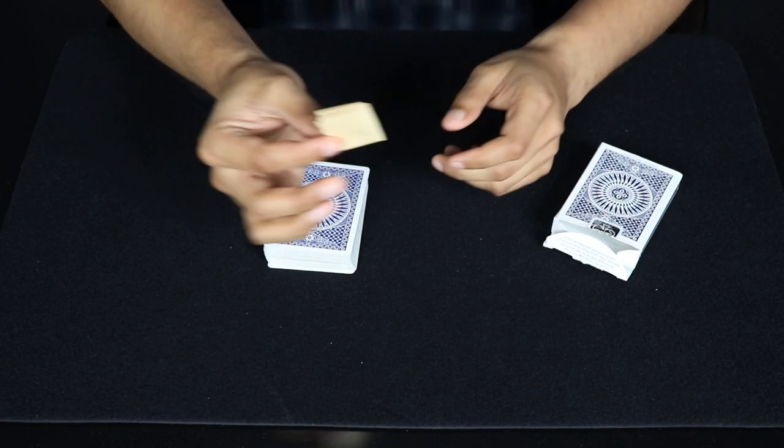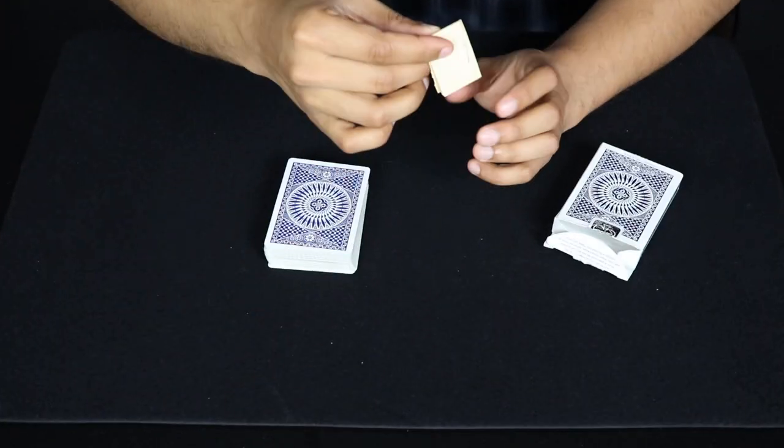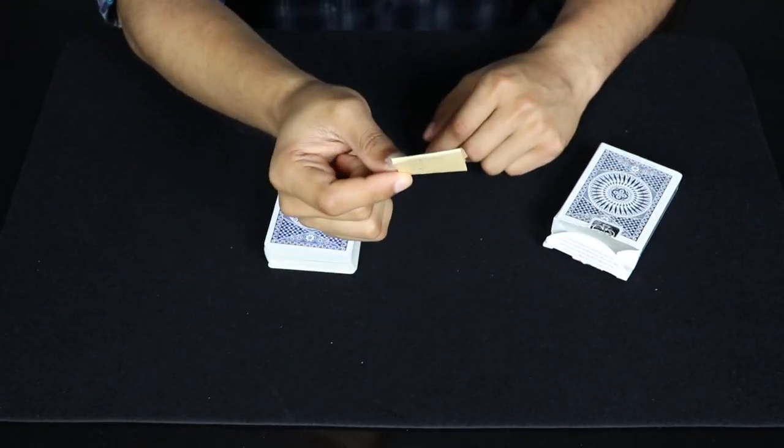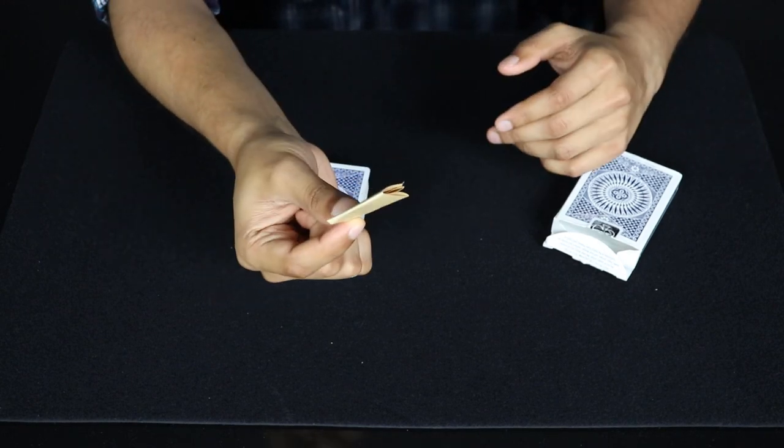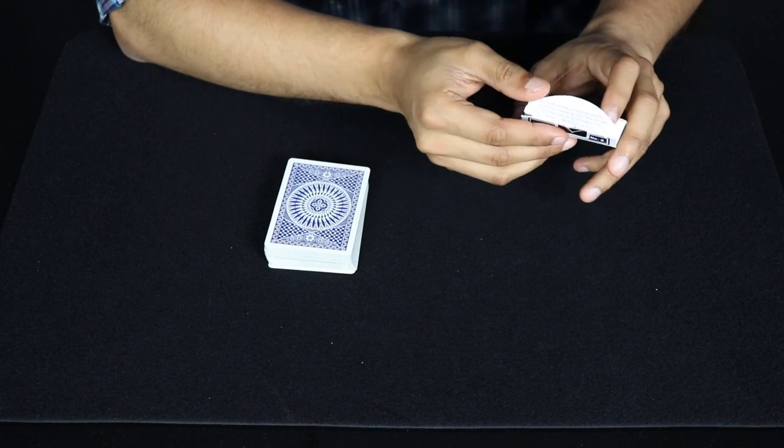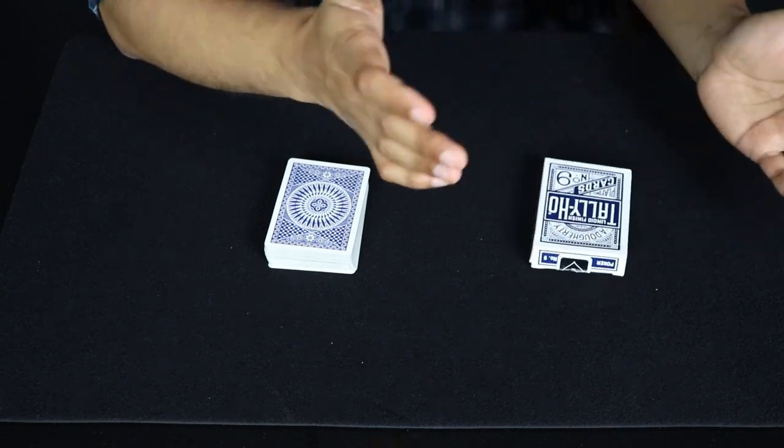All right now check this out. So here on this piece of paper I have a prediction written down and maybe you could see through it, maybe you can't, but whatever it is, I'm going to take the prediction and put it inside this box and just close it up.